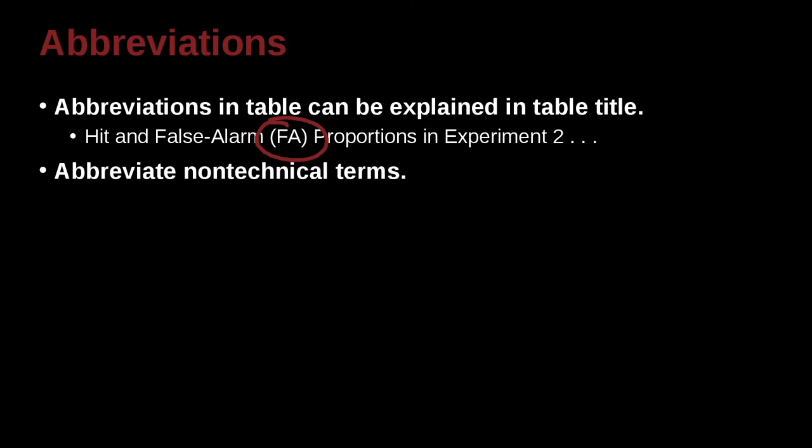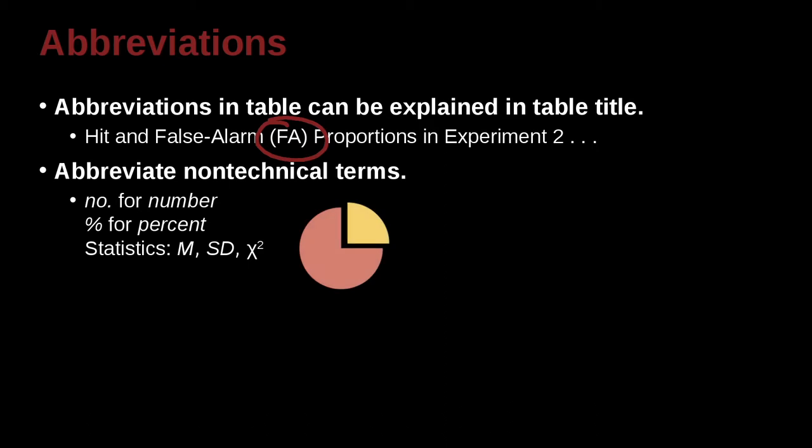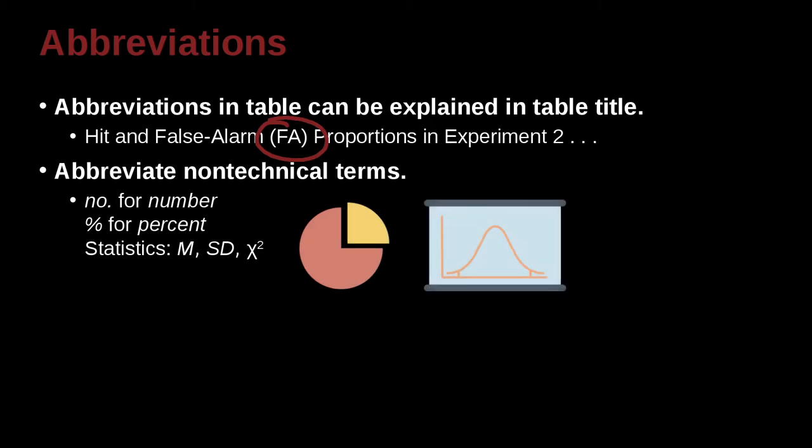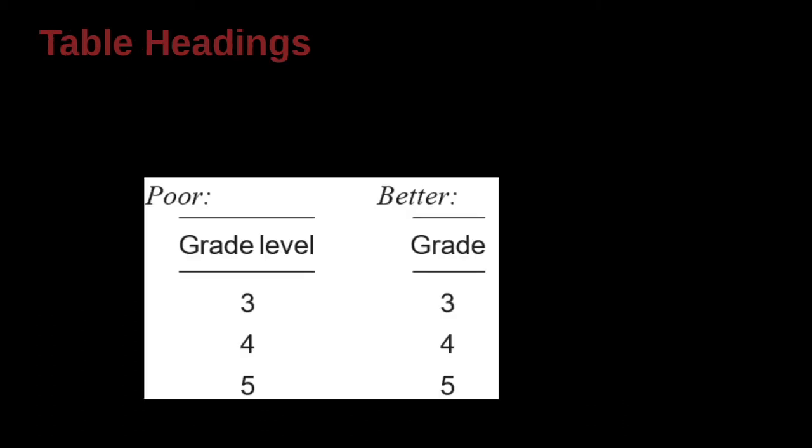You can abbreviate non-technical terms. So for example, you could say No. for number. You could say percent sign for percent. For statistics, you could write M. You could write SD, standard deviation. You could write chi squared. So you can use these ways to try to make your table title a little bit shorter.